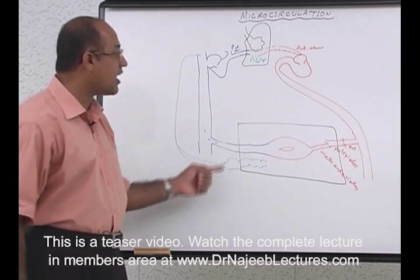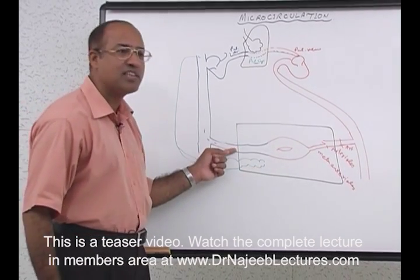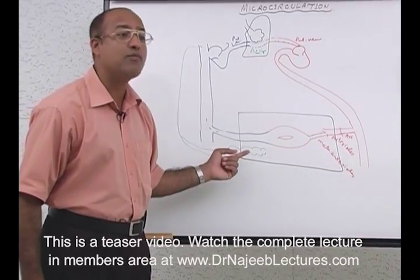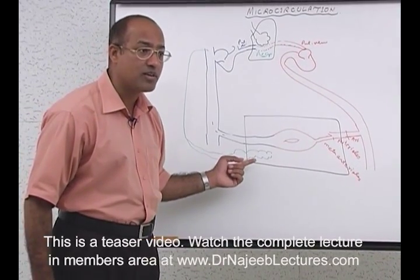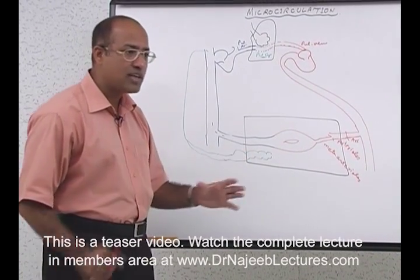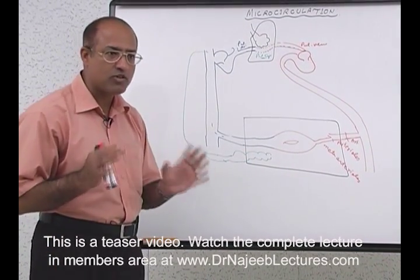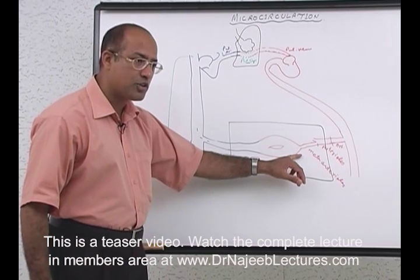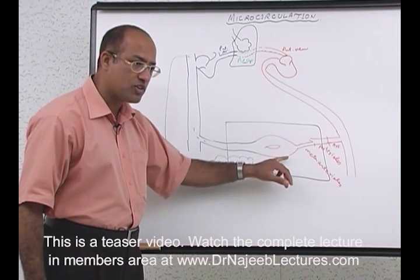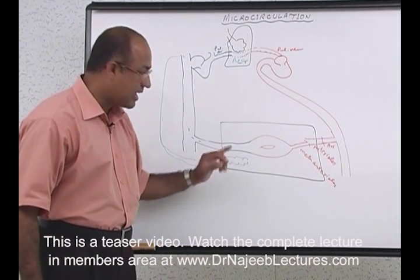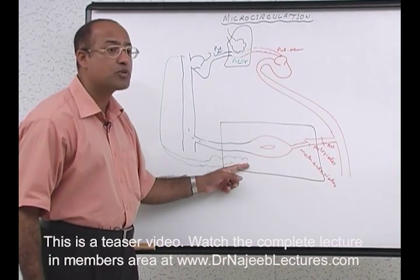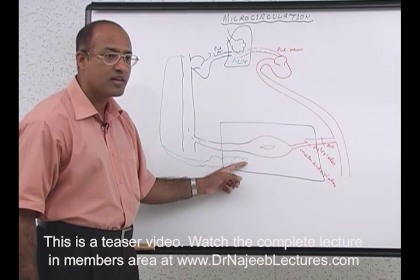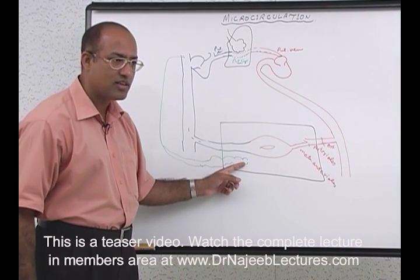Students always remember venous output but most forget the lymphatic output. When dealing with microcirculation, we must talk about arterioles and associated capillaries and venules, and we should never forget to talk about lymphatics.